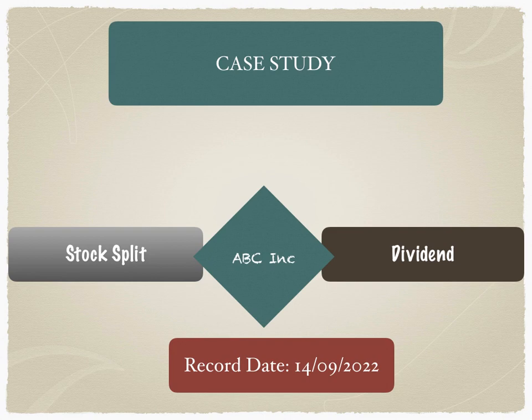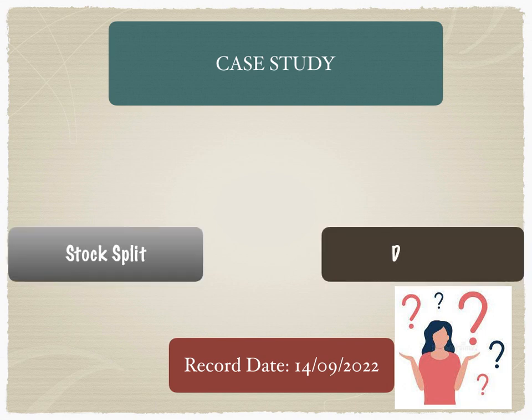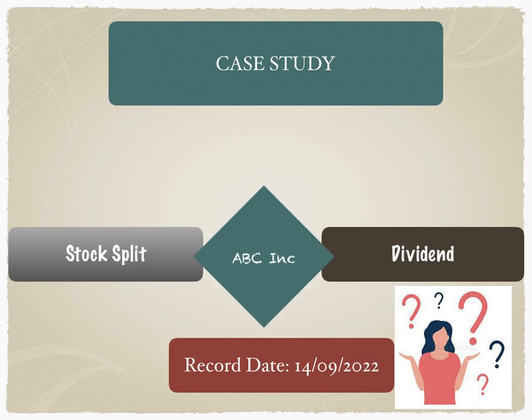The answer is yes. There is no limit as to how many entitlements can be announced for a company with the same record date. It's simply a question of the ability of the transfer agent to process these entitlements.